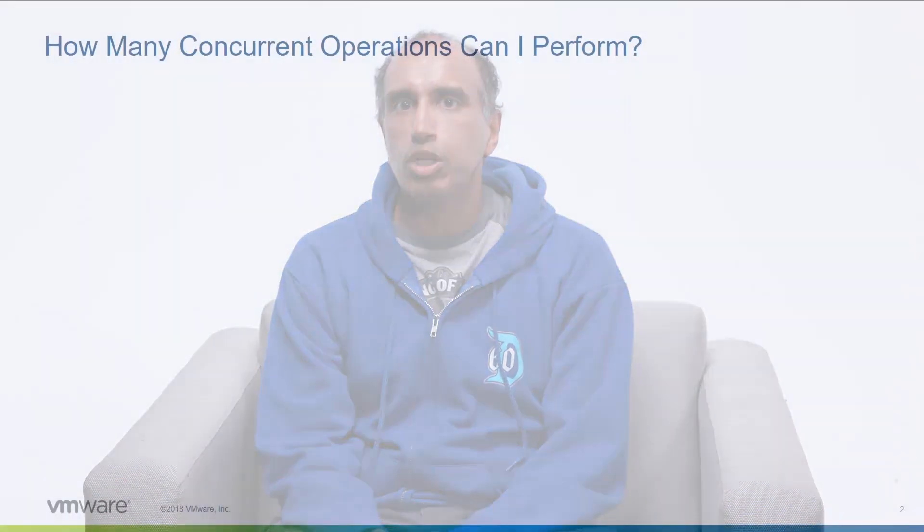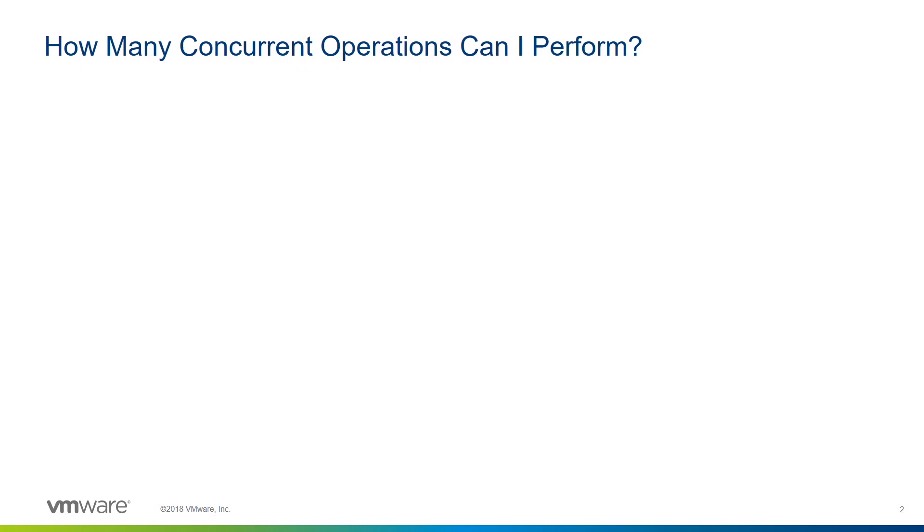At VMworld 2018, I presented a breakout session on vCenter performance. In this short video, I'd like to go over one of the most commonly asked questions that I get, and I'm going to use some of the material from that slide deck. Specifically, I'm going to talk about how many concurrent operations we can perform in vCenter. I get asked this question a lot, so let's start with some global information.